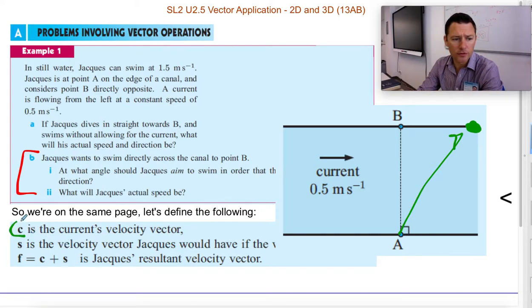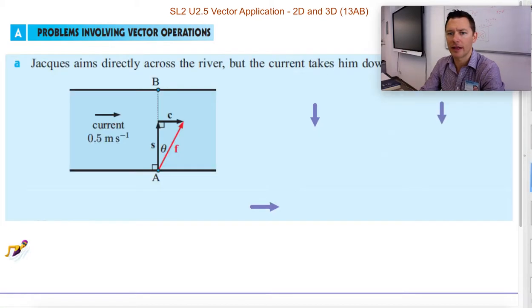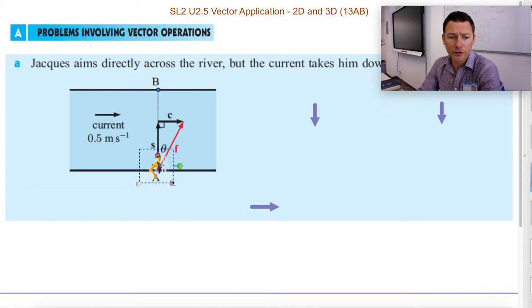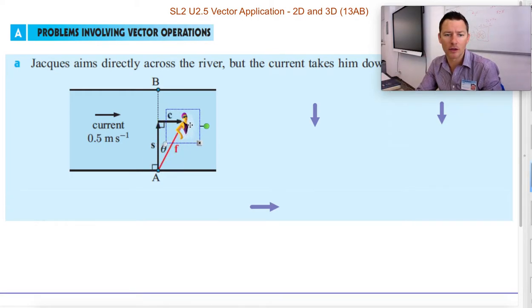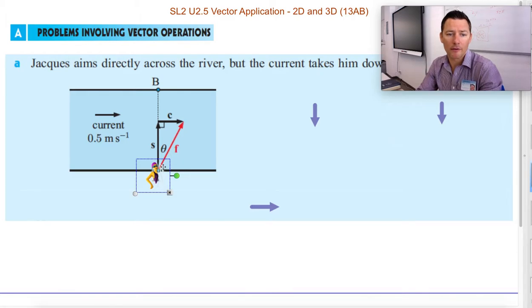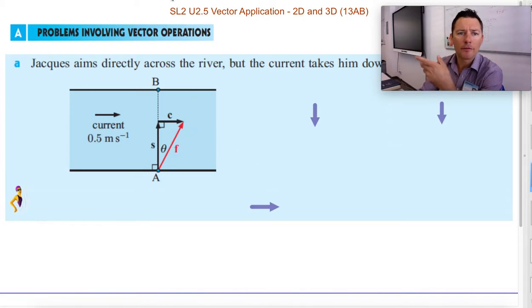So we're going to try to use c as the current's velocity, and s as Jacques' swimming speed, and f as the final overall velocity. So if Jacques aims directly across, Jacques' body is pointing directly across. So here's Jacques, and if she's swimming directly pointed straight across, she gets blown downstream a little bit even as she moves straight across. So that's her final vector.